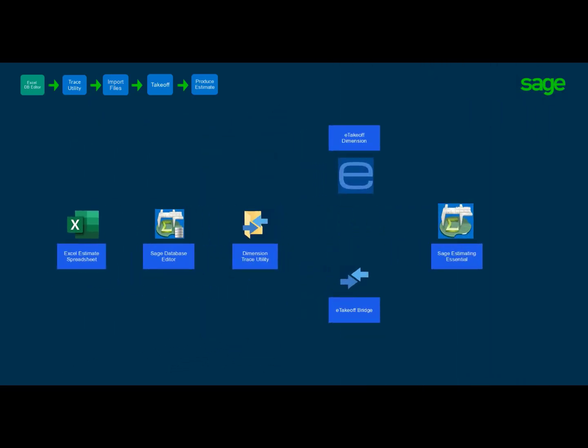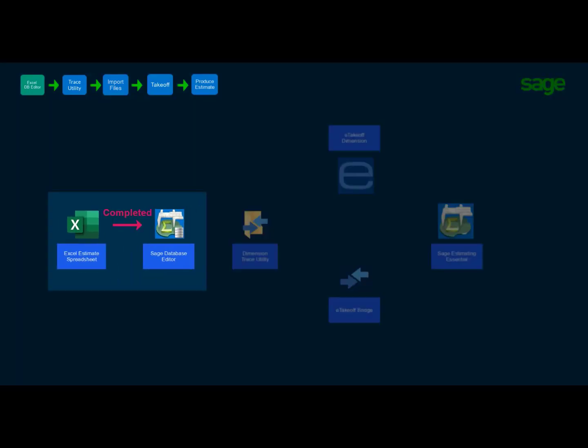Congratulations! We have just completed the first step towards utilizing the SAGE Estimating Essential solution. In this step, we created the database from the Excel estimate spreadsheet simply by copying and pasting to our database editor. This step has laid the groundwork for all future steps. In Step 2, Trace Utility, we will discuss what the Trace Utility provides and then walk you through creating a library of traces from the database editor. We will continue the process in Step 2.